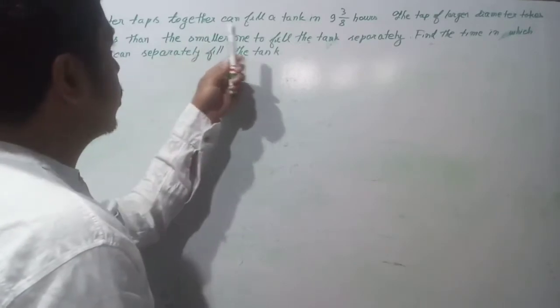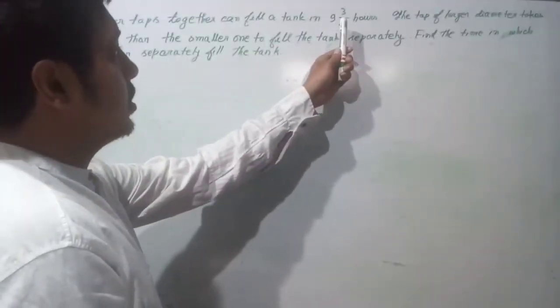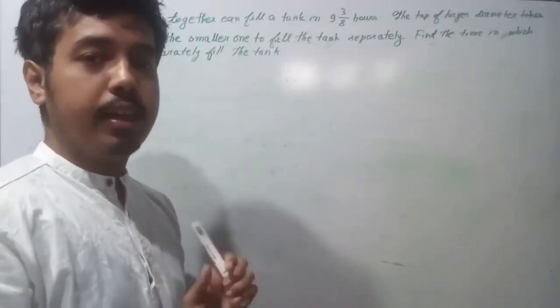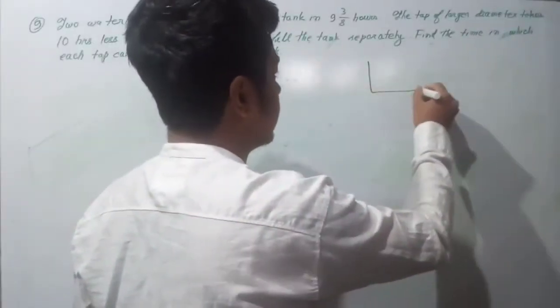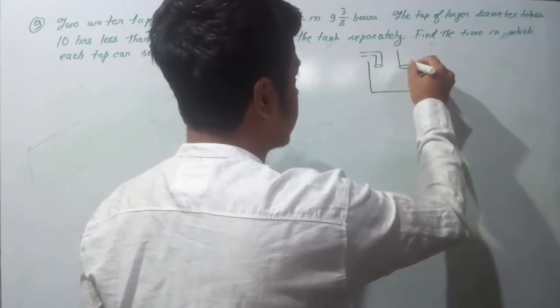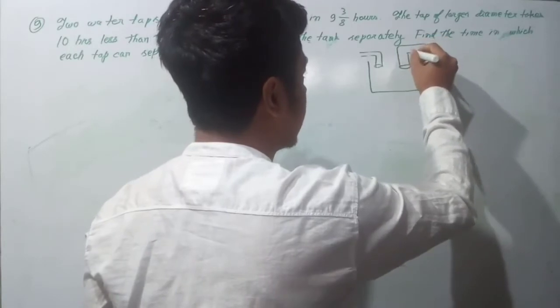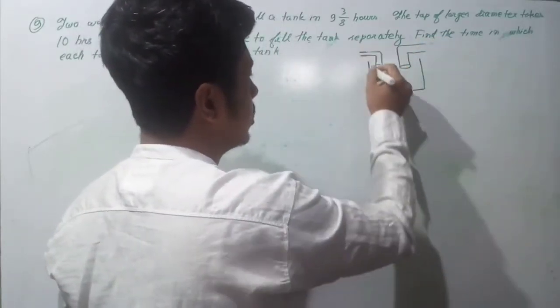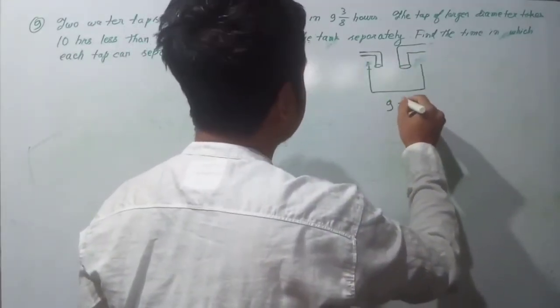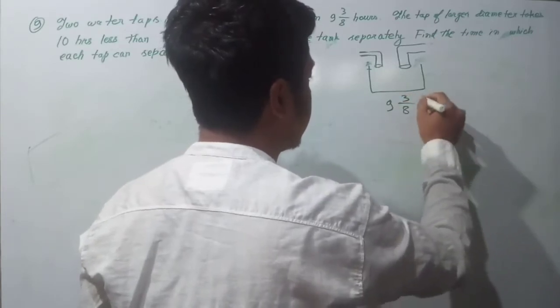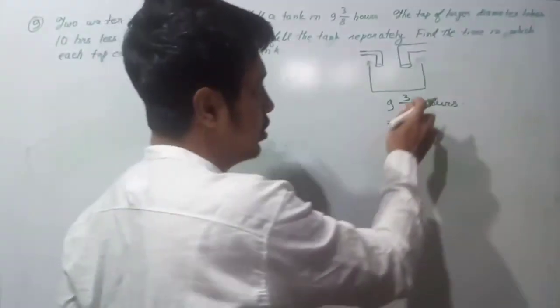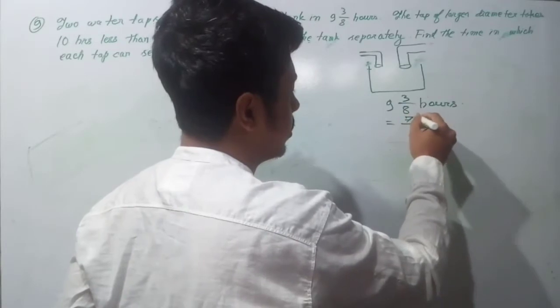Two water taps together can fill a tank in 9 3/8 hours. This is the water tap, and this is the container. Two water taps will complete this tank in how many hours? 9 3/8 hours, that's 75/8 hours.